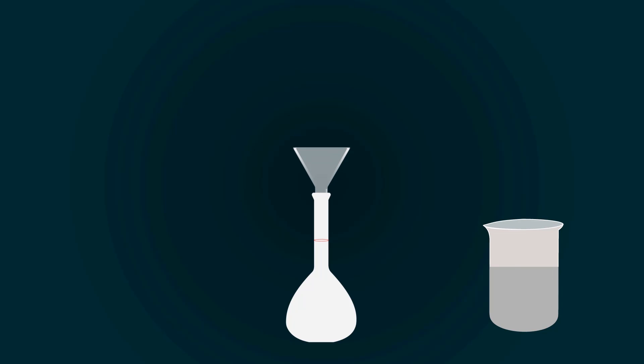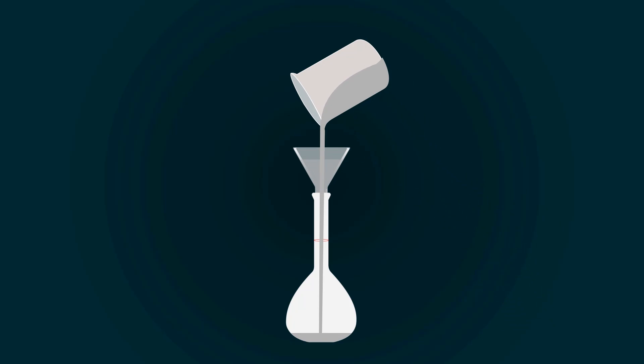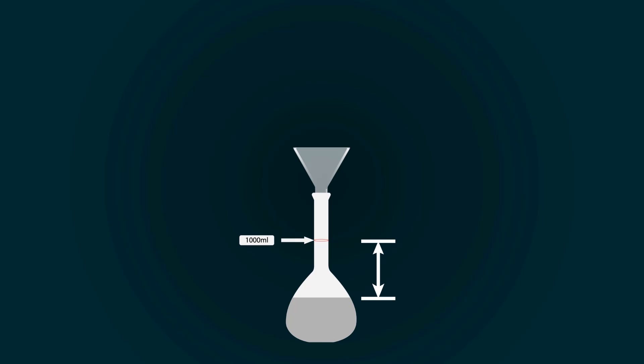Now, pour all the solution into the volumetric flask with the help of the funnel. You have to fill the volumetric flask up to the 1000 milliliter point, for that you have to add more distilled water.